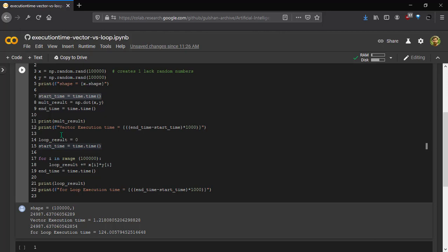Now coming to the execution time. We can see here that the vector execution time is just 1.21 milliseconds, whereas for loop it is taking 124, which is even more than 100 times. Let's run it again two more times. So you see that vector execution time is even 100 times lesser in comparison to the loop execution time.